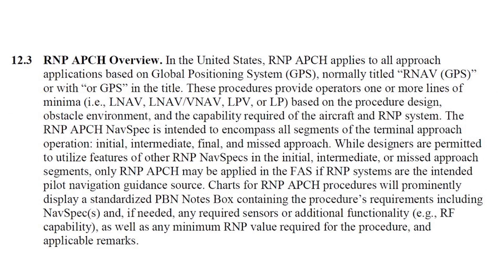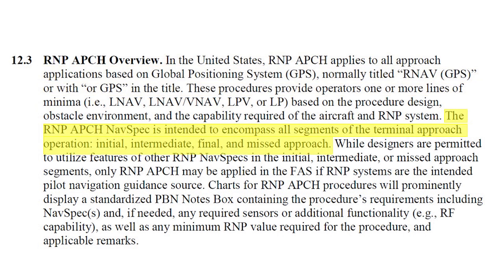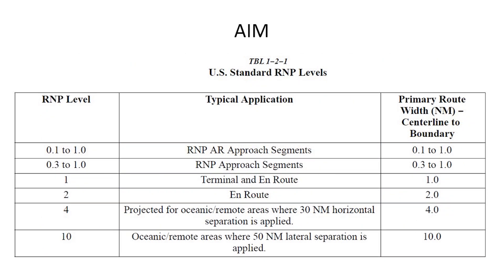But what does RNP APPROACH mean? An explanation in the AIM helps a little. The key point is in the first two sentences, which may seem redundant. After all, we just saw that the procedure title RNAV GPS tells you that an IFR-approved GPS is required. The next sentence provides more specifics about the RNP APPROACH NAVSPEC, and a table from the AIM offers more details. The detailed RNP APPROACH NAVSPEC criteria are 1.0 nautical mile for segments until you join the final approach leg, and 0.3 nautical miles along the final approach.